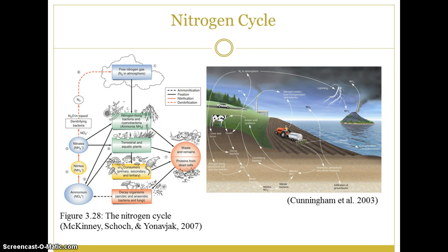Nitrogen is essential for the synthesis of proteins and DNA. While nitrogen gas (N₂) is a relatively inert gas, it makes up 78% of our atmosphere by volume. Despite this relative abundance, nitrogen gas is unreactive, so it must be converted to a form available to life. Some nitrogen is fixed from the atmosphere by lightning, but most — about 90% — is fixed through biological fixation by bacteria. Nitrogen fixation is defined as converting inorganic molecular nitrogen to ammonia or nitrate, which are forms available for biological uptake.